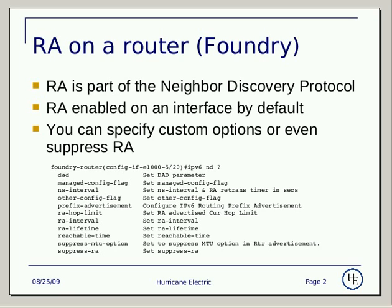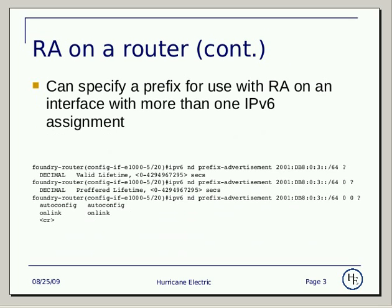On this slide, we have an example output of the available options you can use. If on this interface you had multiple /64 allocations and you only wanted to use one for hosts to auto-configure out of, you would use the prefix advertisement sub-command.